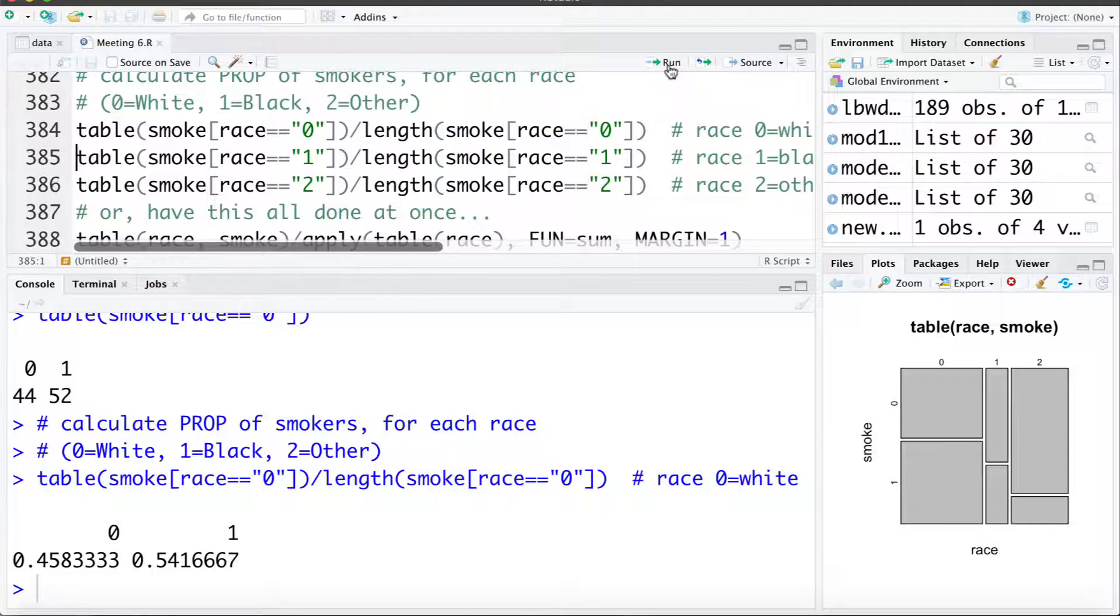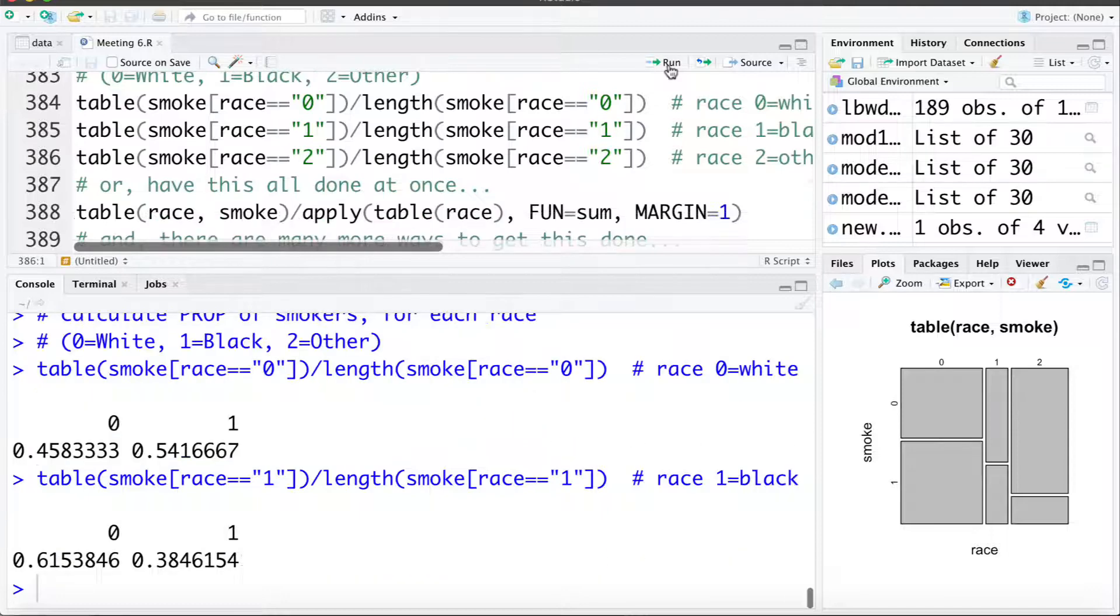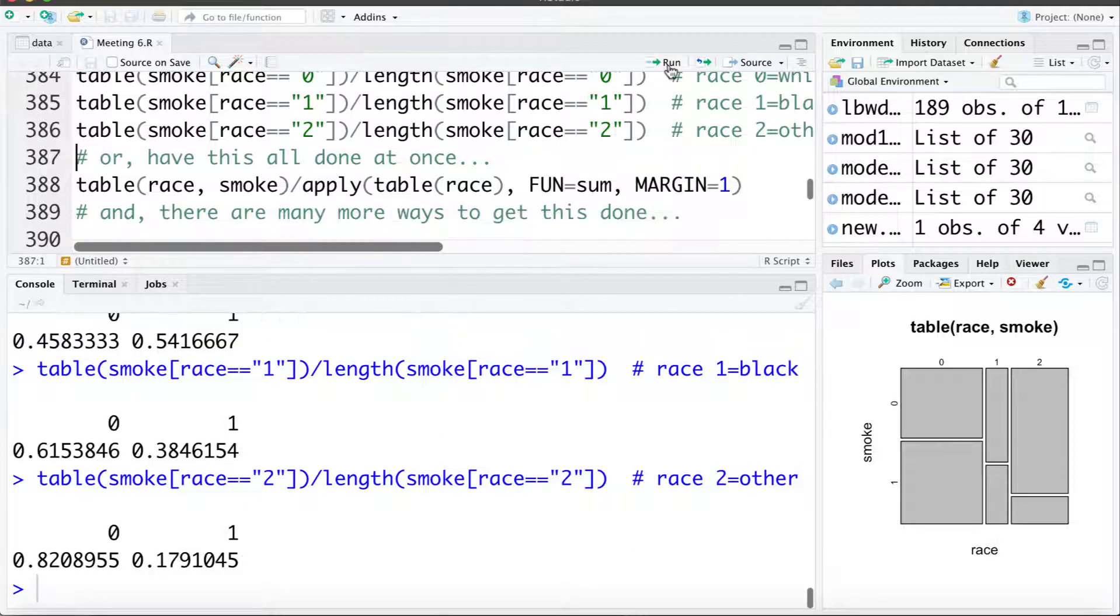Now I'm going to do the same here but for race category 1 or black. We can see there 38.4% are smokers and then doing it for race category other 17.9% are smokers. We can see this is quite a strong association between the two variables. Those who are in the white category are much more likely to smoke than black or other.